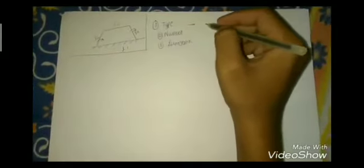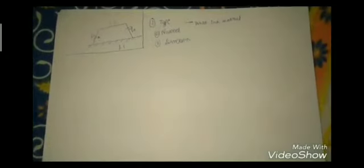In type synthesis we mainly determine what link or material we are going to use in our mechanism. The link may be binary, ternary, or quaternary, and the material may be cast iron, steel, aluminum, etc., as per the requirement.